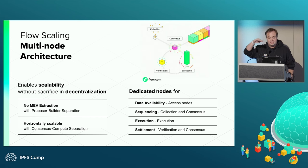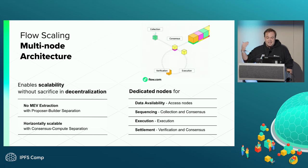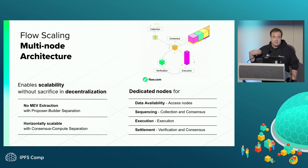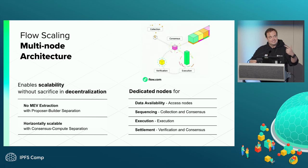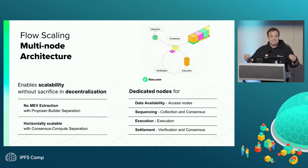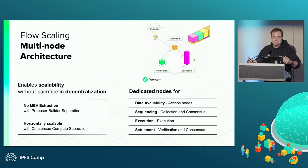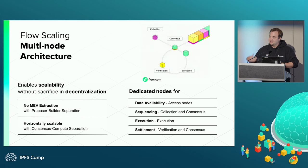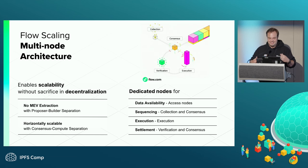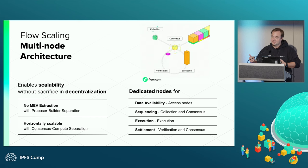Comparing to Ethereum's typical layers — data availability, sequencing, execution, and settlement — Flow's multi-node architecture covers all of these, fully integrated within the protocol itself. Access nodes provide ingress and egress to the network, with all data available to run scripts and query data at the edge, very fast for developers. Collection and consensus nodes handle sequencing, execution nodes handle execution, and verification plus consensus nodes handle settlement.